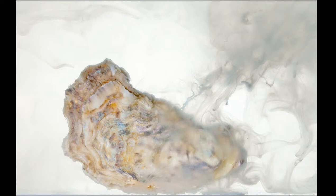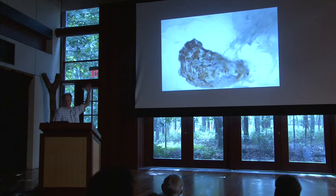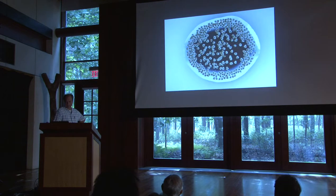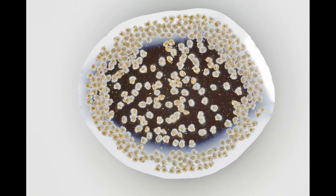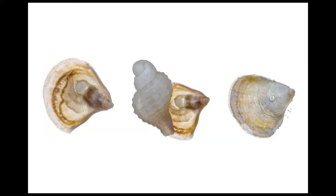This is an oyster — a male casting its genetic material to the current. When met with a female, this is what's produced. In elevated CO2 situations, these larvae never make it to adults. If they manage to settle in an elevated CO2 situation, their shells are 30% thinner.